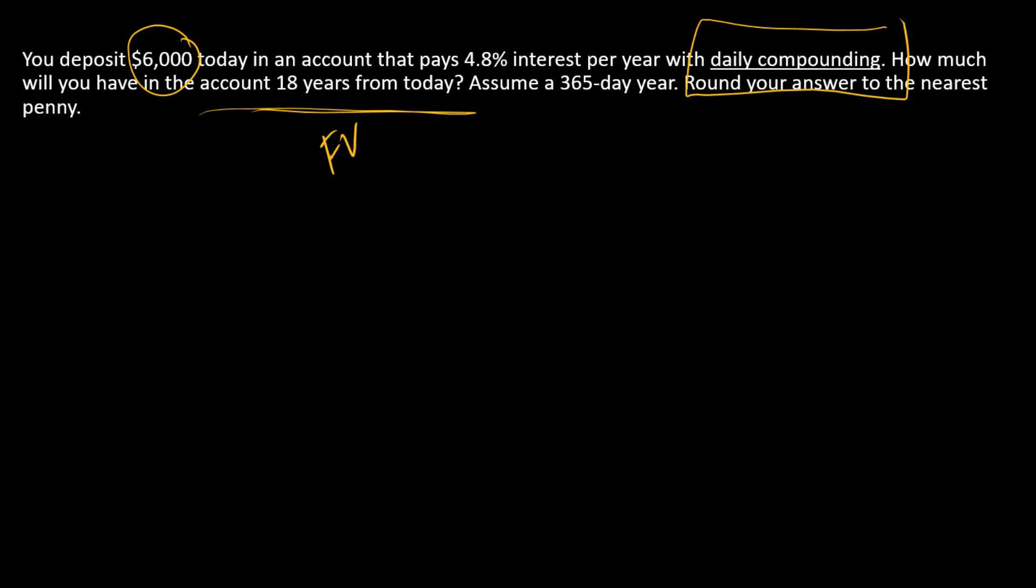All that means is that every single day while the money is in the account, interest will be calculated and paid, and so today's interest compounds on yesterday's interest and so on. To solve this problem, we're still going to use the same idea with our formulas. The FV is PV times (1 plus a discount rate) to the power N.